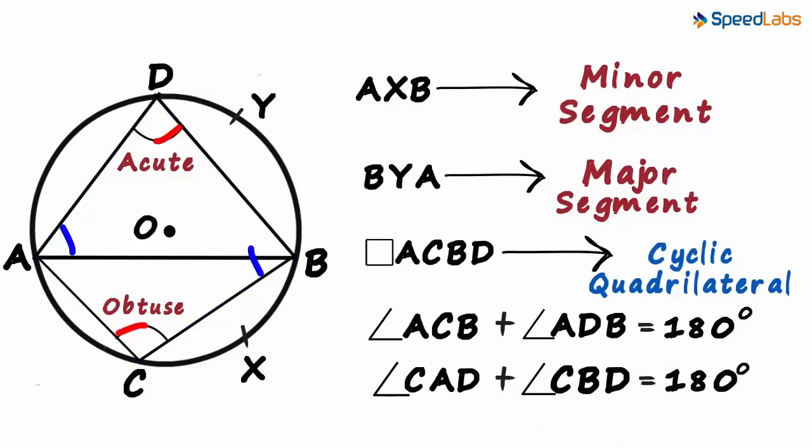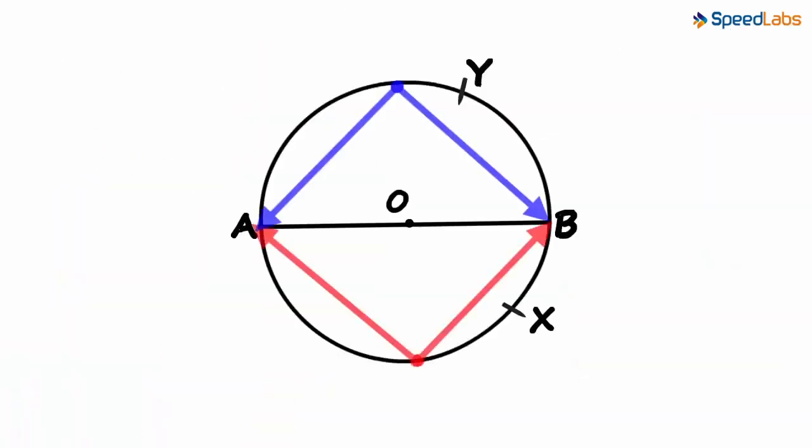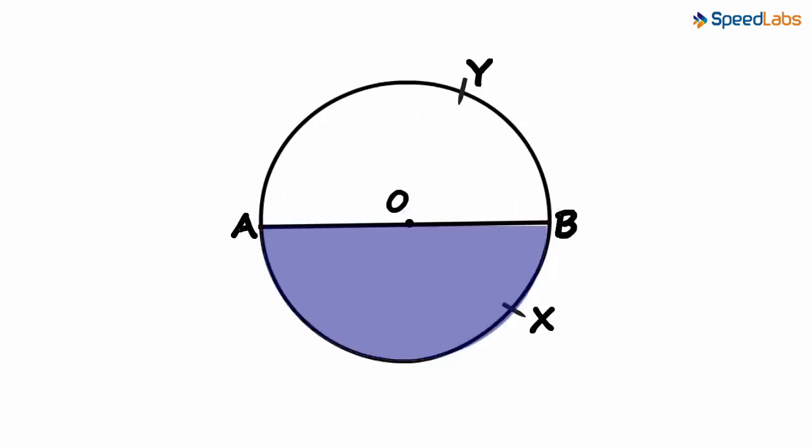Remember, opposite angles add up to 180 degrees. This helps us to understand one very important property about angles formed in semicircles. In this figure, the chord AB passes through the center O and forms two segments, AXB and BYA. Because the chord passes through the center, we can be sure that the two segments are semicircles.